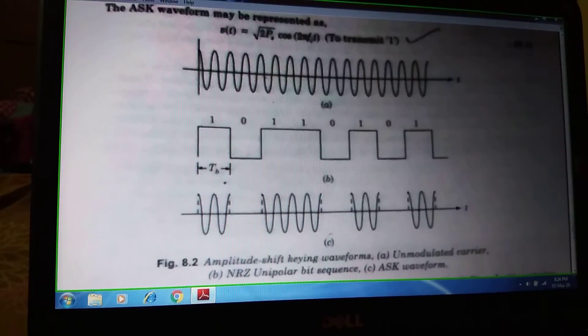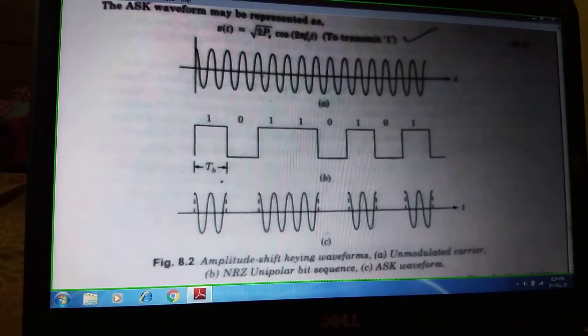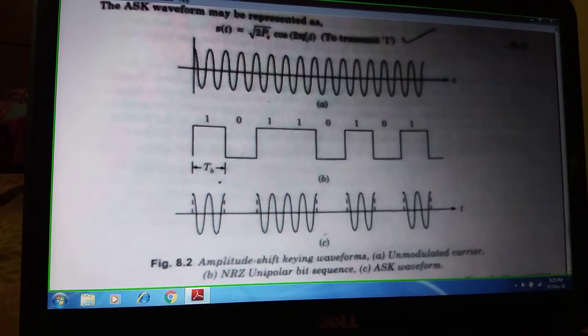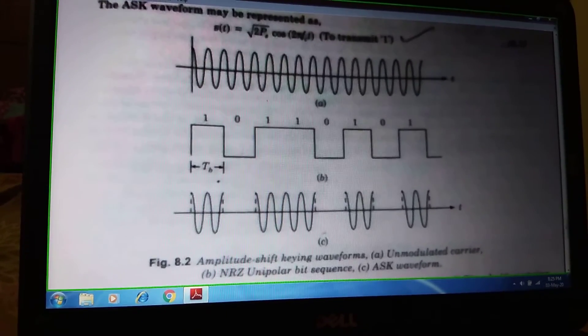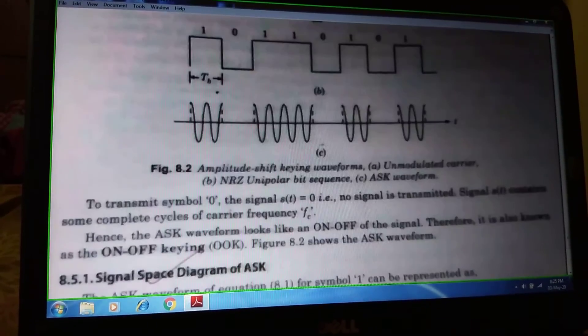There are two mathematical expressions for the modulated output regarding the ASK waveform. Now we will discuss. First, S(t) equals root over 2Ps cos(2π fc t) if we transmit 1, and obviously the S(t) value will be 0 if we transmit 0.